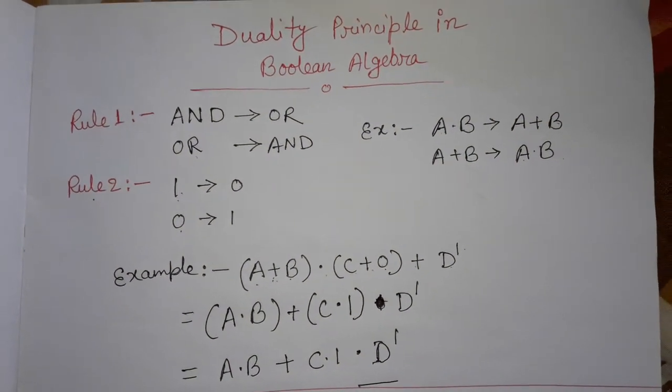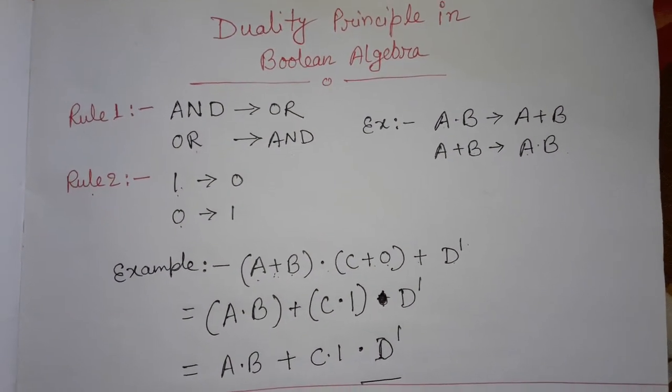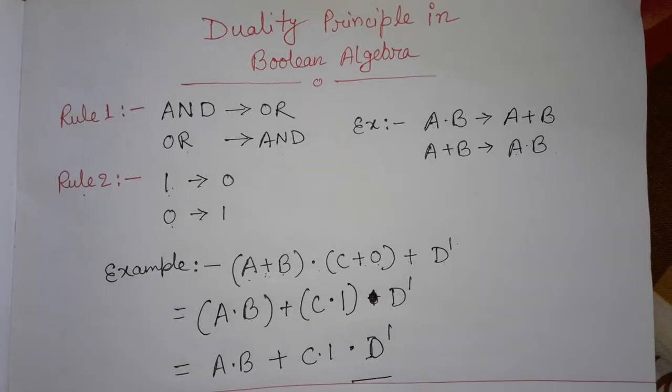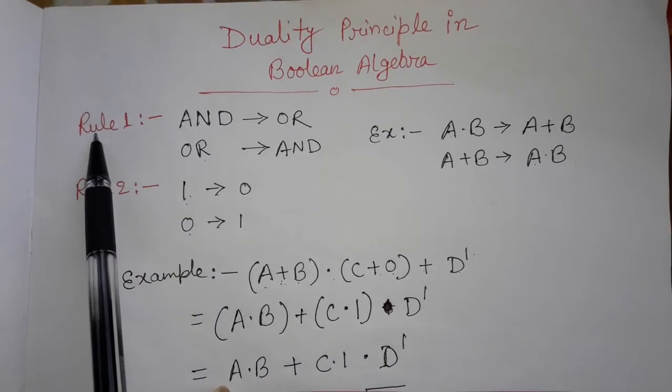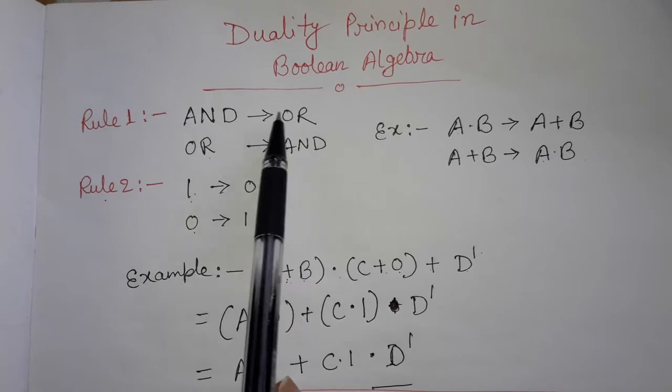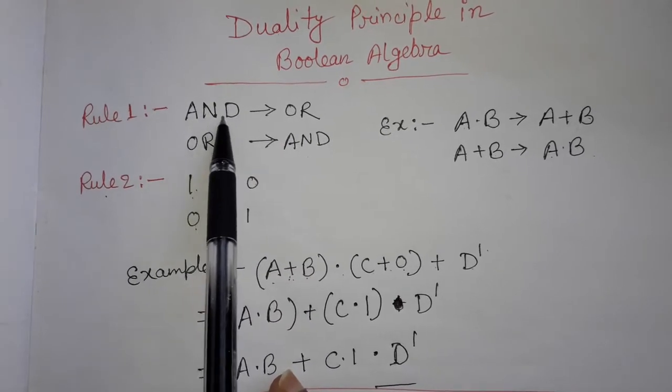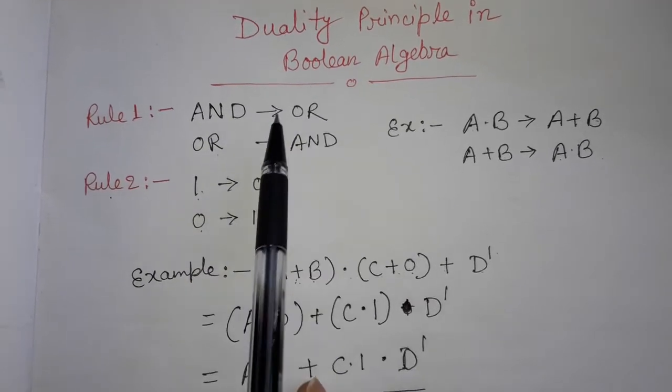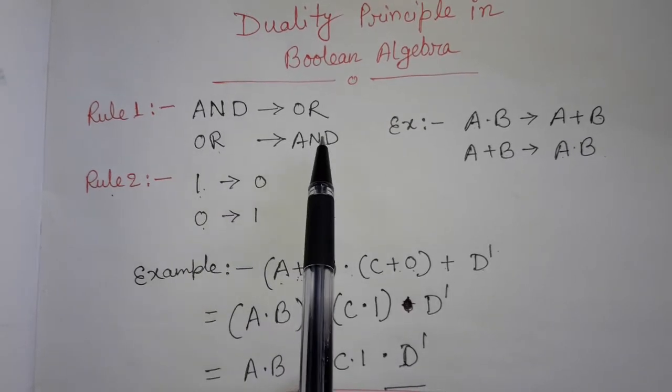Okay friends, today our topic is duality principle in Boolean algebra. Here we can see that we are having two rules. Rule one: if you are getting AND in expression, Boolean expression, you have to convert it into OR. If you are getting OR, you have to convert it into AND.